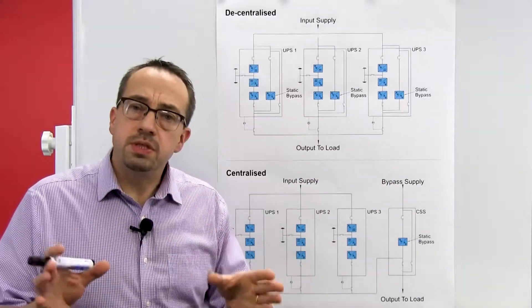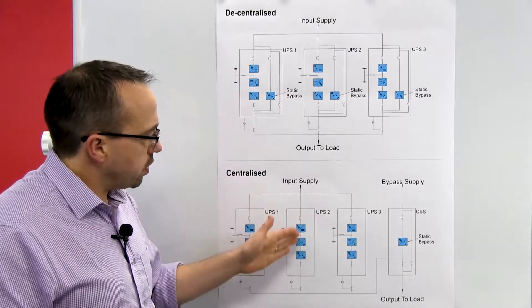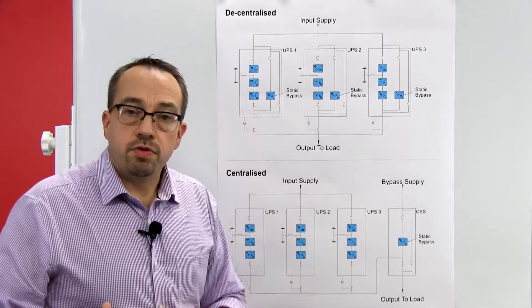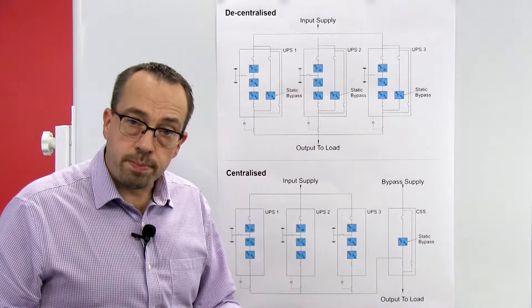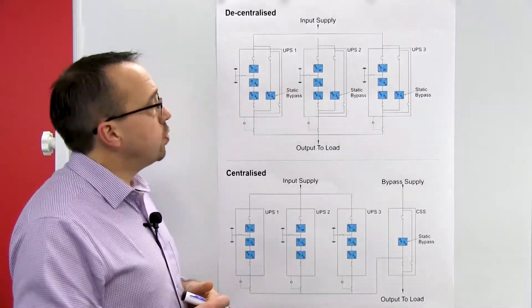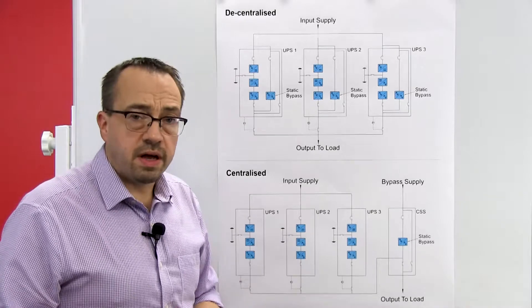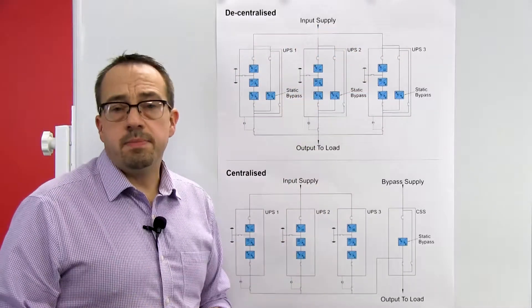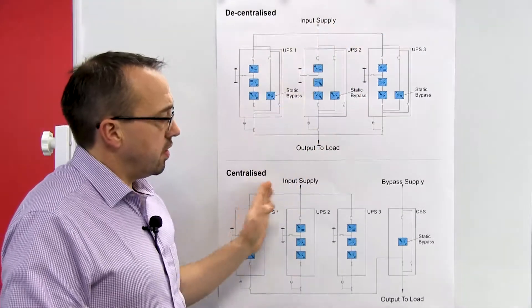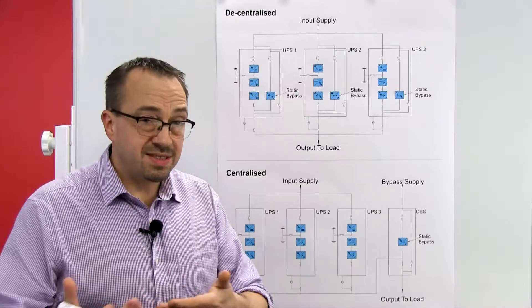There is something important to consider: the centralized system is effectively dual input, because the rectifier modules are fed from one source and the bypass module is fed from another. If you wanted to apply that same dual-input approach to the decentralized solution, you would have to increase the breakers feeding each UPS to two — one for the rectifier and one for the bypass line — meaning the switchgear would need six input circuit breakers in total. This additional switchgear cost is typically overlooked.